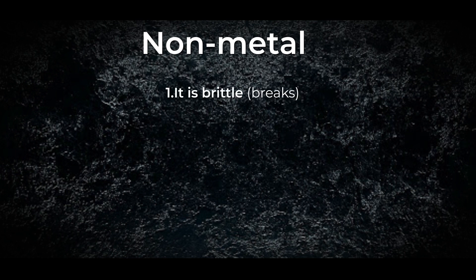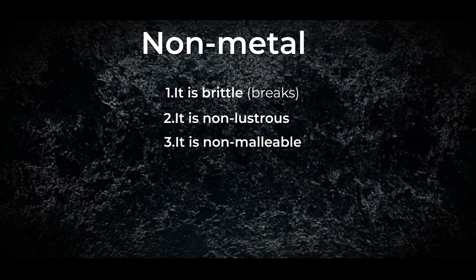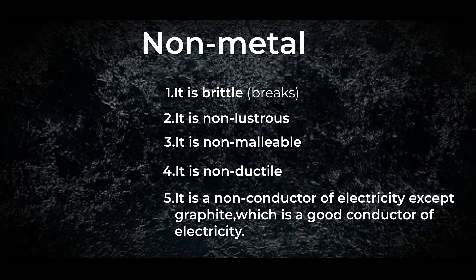Let us move on to non-metals. Non-metals are brittle — it means they break when you hit them or when they fall. Number two, they are non-lustrous — that means they do not shine like metals. Number three, they are non-malleable — like metals, they cannot be beaten into thin sheets. Number four, they are non-ductile — they cannot be drawn into thin wires like metals. And finally, number five, they are non-conductors of electricity, except for graphite, which is a good conductor of electricity.